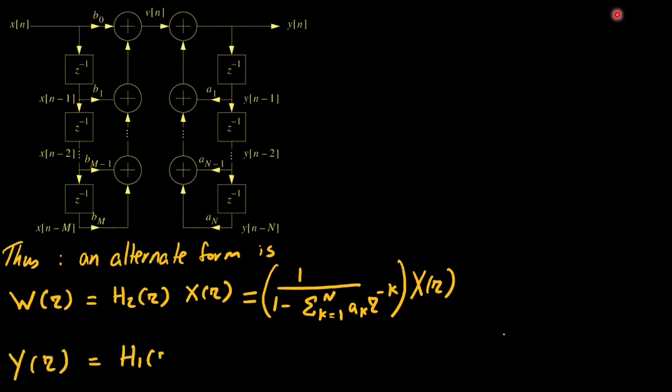And the final output that is y of z is based on h1 of z and the cascaded output that is w of z. So this gives us y of z which is h1 of z times w of z and this is pertinent to the zeros in the system and they are a summation from k 0 to m bk z to the power minus k w of z.